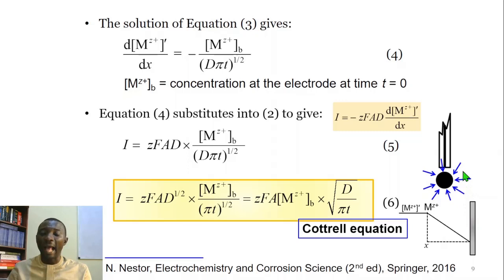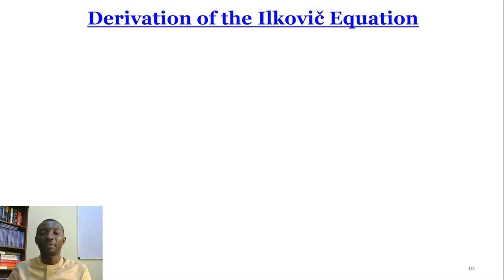However, how do we apply the same equation to a mercury drop, which is forming in a system we don't have access to? Access in the sense that we can directly go into the system to measure the size of the mercury drop and then find its area. This was the question Cottrell, this was the question Ilkovič asked. And he wanted to find the area vis-à-vis the spherical mercury drop.